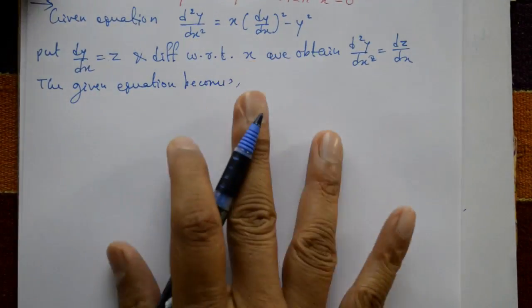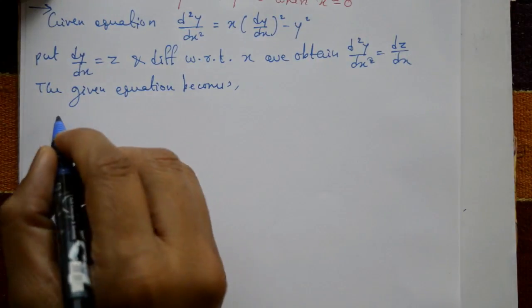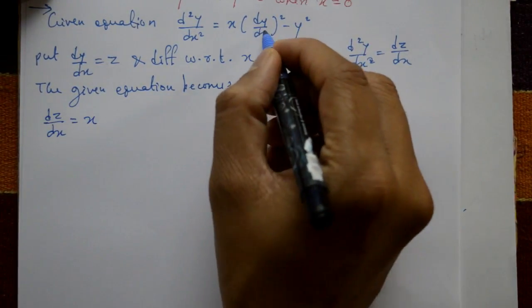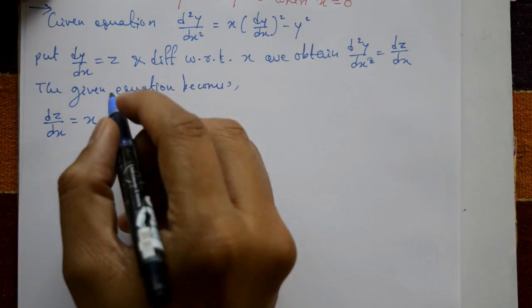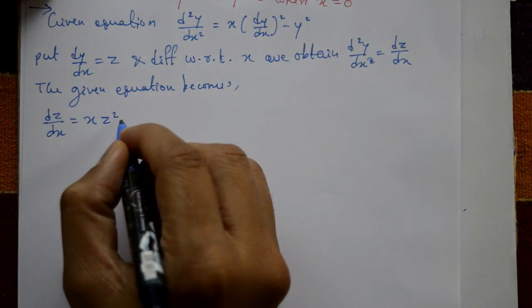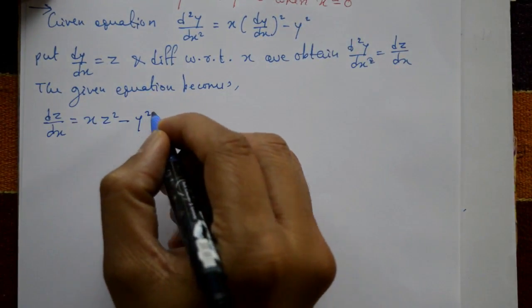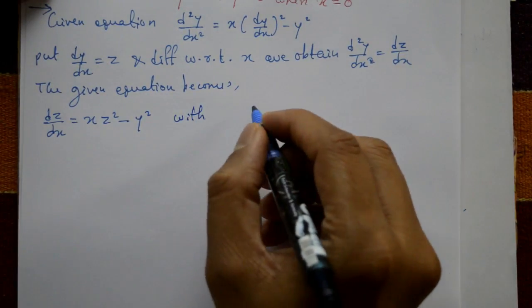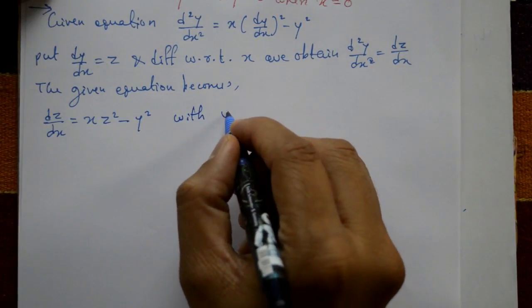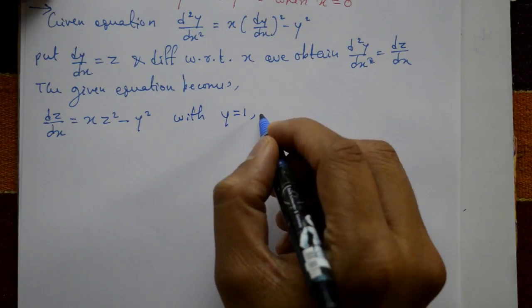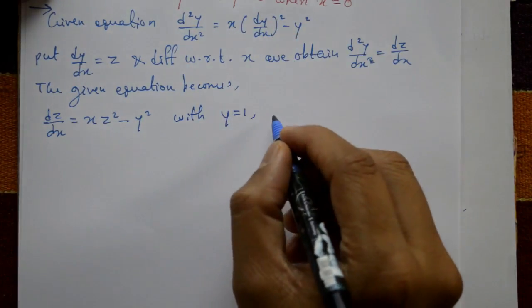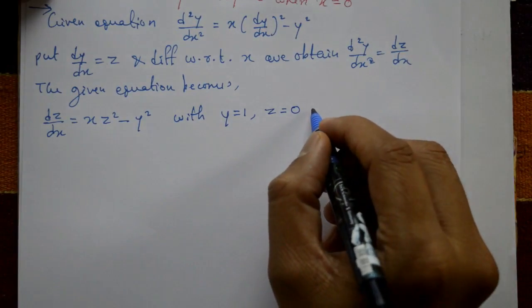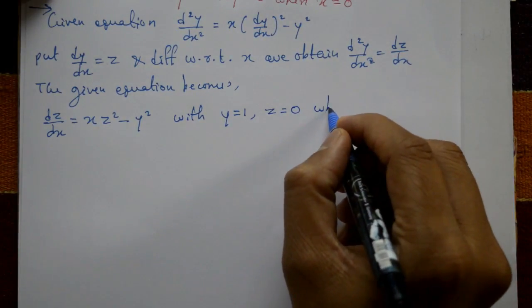The given equation becomes dz/dx = x·z² - y². The initial conditions are: y = 1, y' = 0 — since y' = z, we have z = 0 — and x = 0.